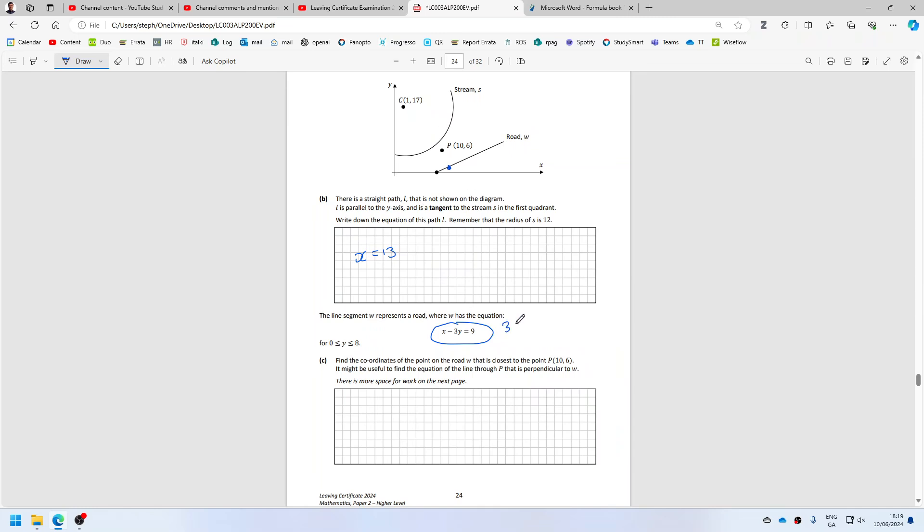And then 3y equals x minus 9. So the slope is 1 over 3. So the slope of the perpendicular line is minus 3.